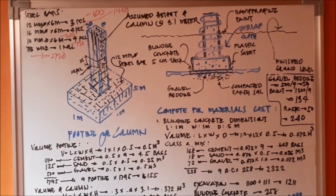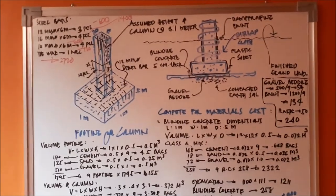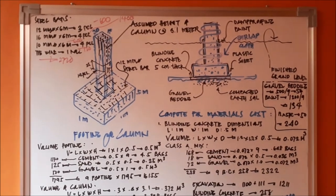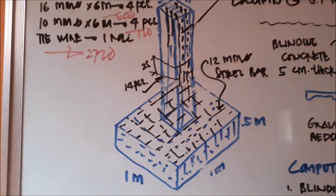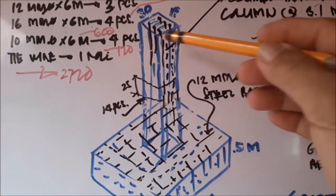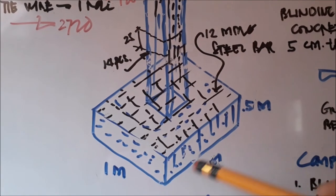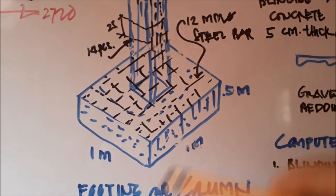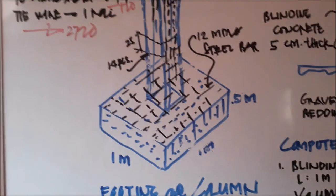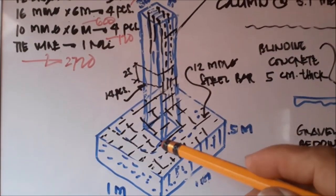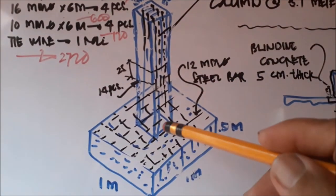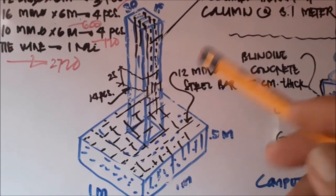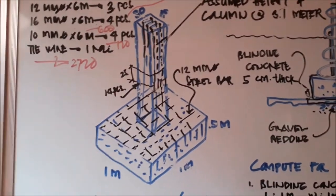Bago po tayo magpaSimula ng ating house, sa edisyon na ito alamin natin ang cost ng isang column — putting and column. Sa larawan, ako ang nagdraw ng column. Ang footing po ay 1 meter by 1 meter, at ang taas ay 0.5 meter — depende sa design ng bahay. Ang column naman ay may height na 2.6 meters. Yung 2.6 na yan ang ating magiging basihan sa estimate ng ating mga materyales.